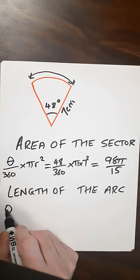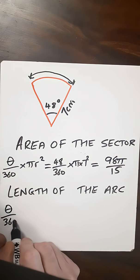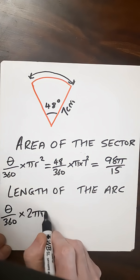then our formula for that, again with degrees, is theta over 360 times 2 pi r.